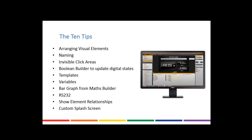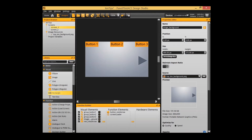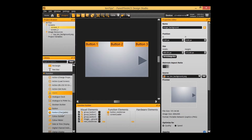The next thing I'd like to talk about is Boolean Builders to update digital states. It's a bit of a random one but something I've found in a lot of large projects that makes a very large difference. The main thing in large projects is the sheer number of elements — it can become overwhelming — so I look for ways to minimize the number of elements I'm using.